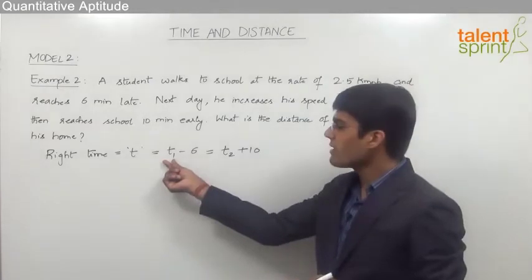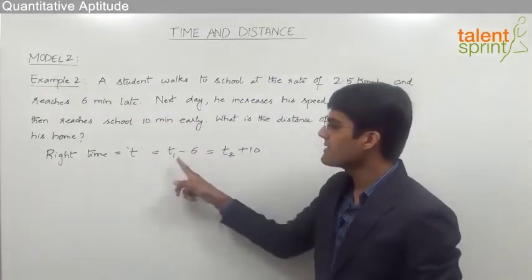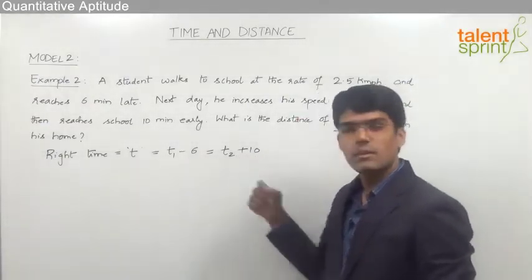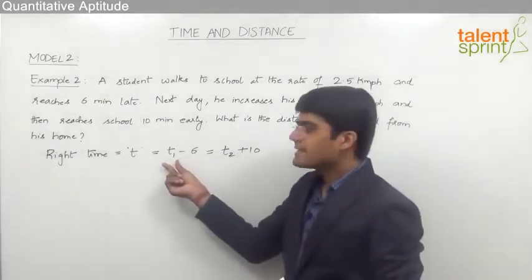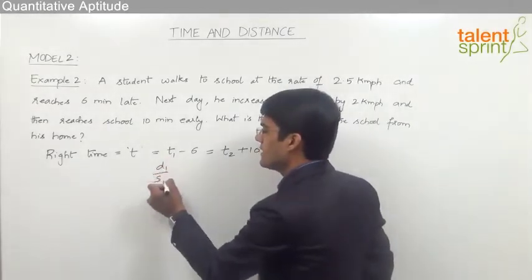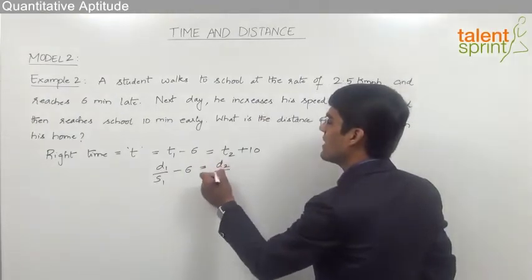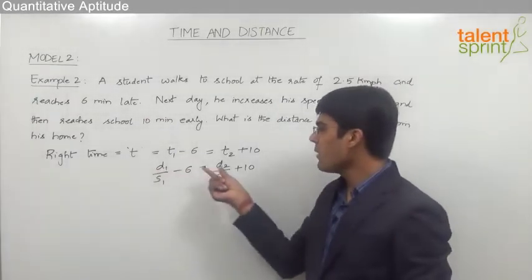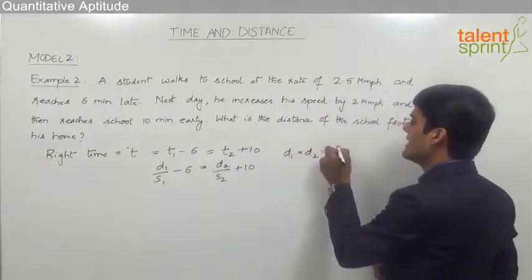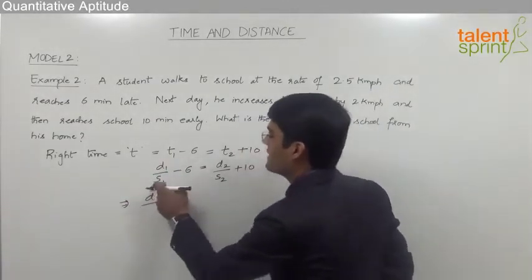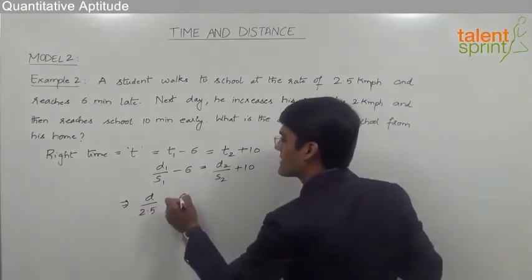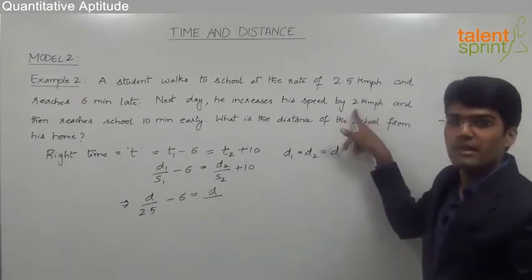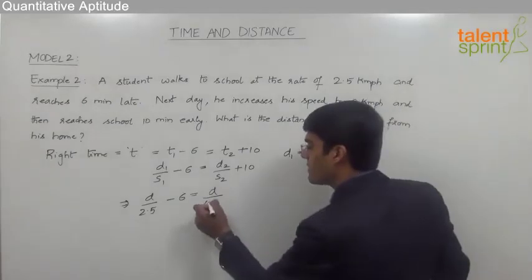In the first case, the time taken was t1; subtracting 6 (since he was 6 minutes late) gives the right time t. In the second case, the time taken was t2; adding 10 minutes gives the right time t. Time equals distance divided by speed, so t1 equals d1 by s1 minus 6, and t2 equals d2 by s2 plus 10. Since the student travels from home to school in both cases, d1 equals d2, so let us call it d.